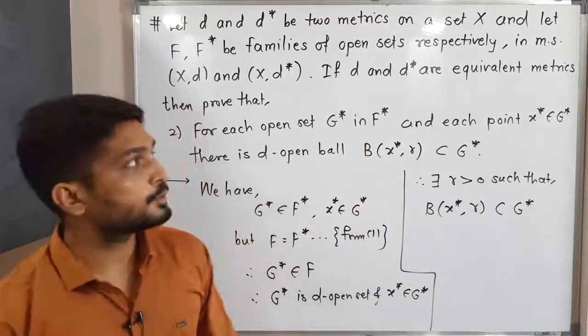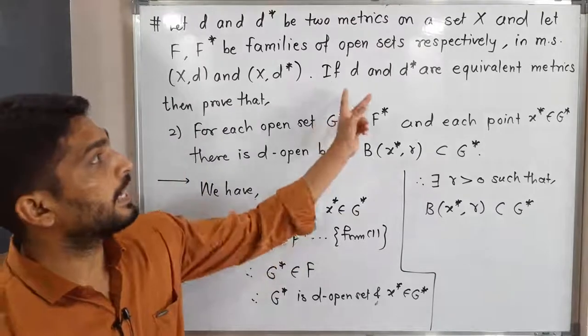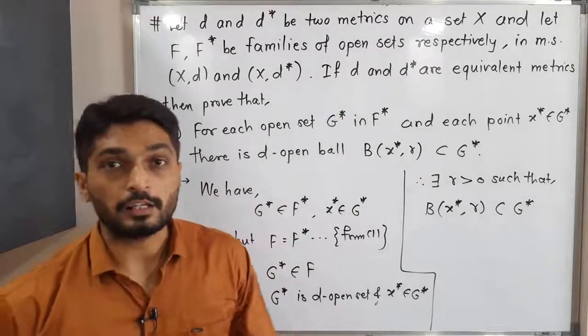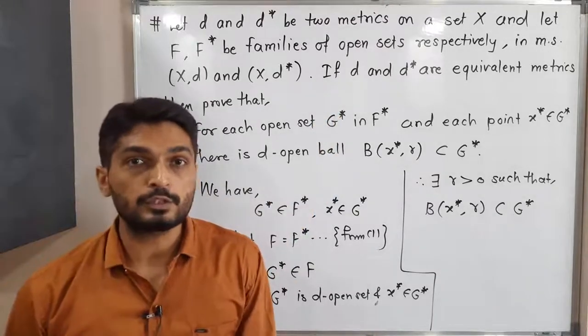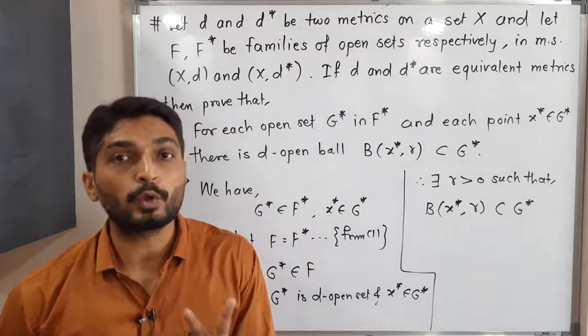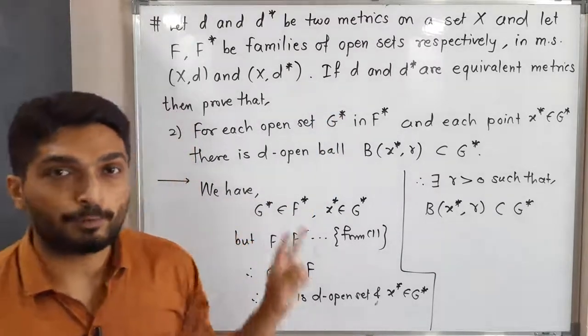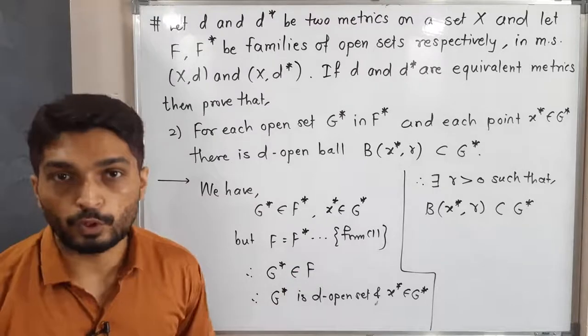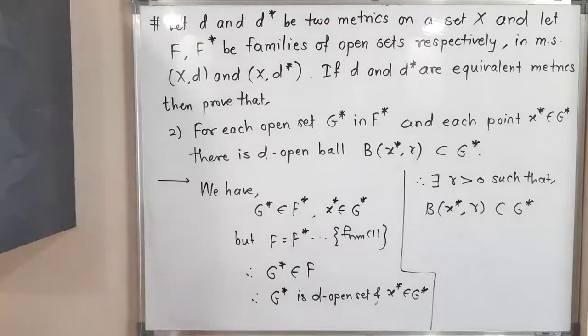So that means if D and D star are equivalent metrics, we have proved two very important results right now. Make a screenshot of it, then we will stop. Thank you, bye.